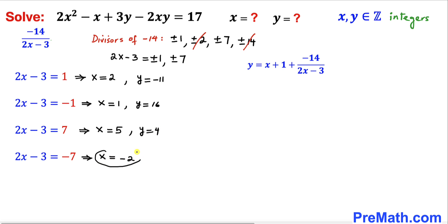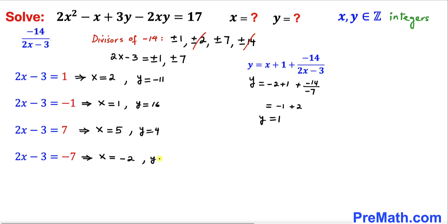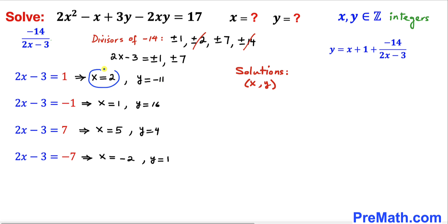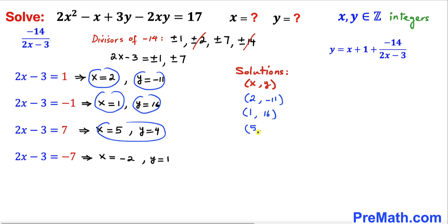Finally for x equals negative 2: y equals (negative 2 plus 1) plus (negative 14) divided by negative 7, since 2x minus 3 equals negative 7. So y equals 1. Our four solutions (x, y) are: (2, negative 11), (1, 16), (5, 4), and (negative 2, 1).